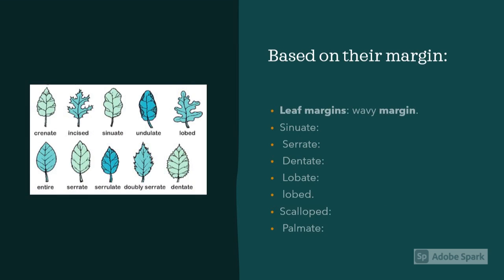Let's see some of the varieties based on the margin. The most common are wavy margins, sinuate, serrate, lobate, lobed, scallop, palmate and dentate. The given picture shows how the margins are present in the leaf.